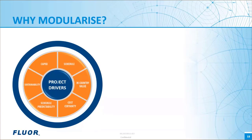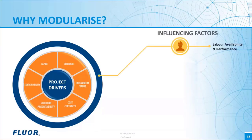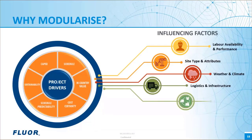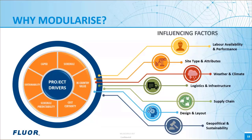A project must identify and evaluate the presence and relative strength of any influencing factors to recognize their potential impact relative to the drivers and goals. Influencing factors can be both project and site specific and may include labour availability and performance issues, site type and attributes, weather and climate impact, logistics and infrastructure constraints, supply chain synergies, design and layout restrictions, and geopolitical and sustainability requirements. Once the problems have been correctly identified and their potential impact understood, the project can determine what solutions should be applied to best address them. Modularization represents one solution amongst many that a project can consider and apply to de-risk the project.